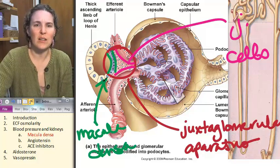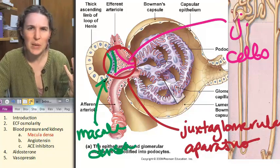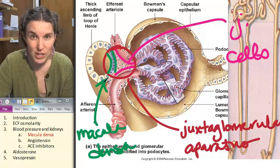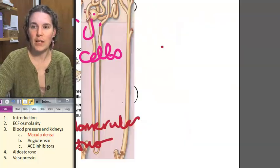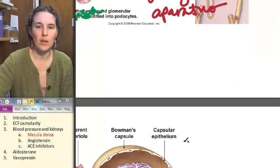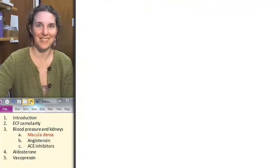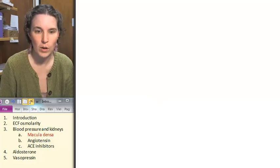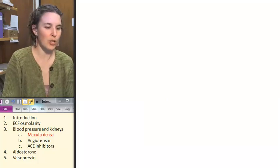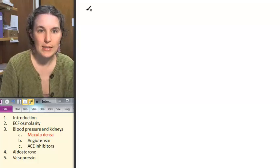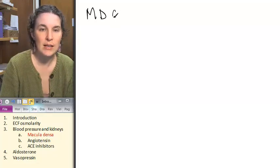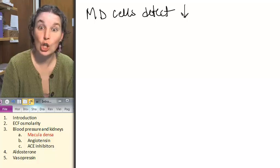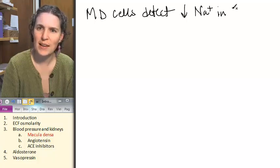How does it do this? How does the macula densa, like what is it paying attention to to give it information about, essentially, blood pressure? Here's how it works.